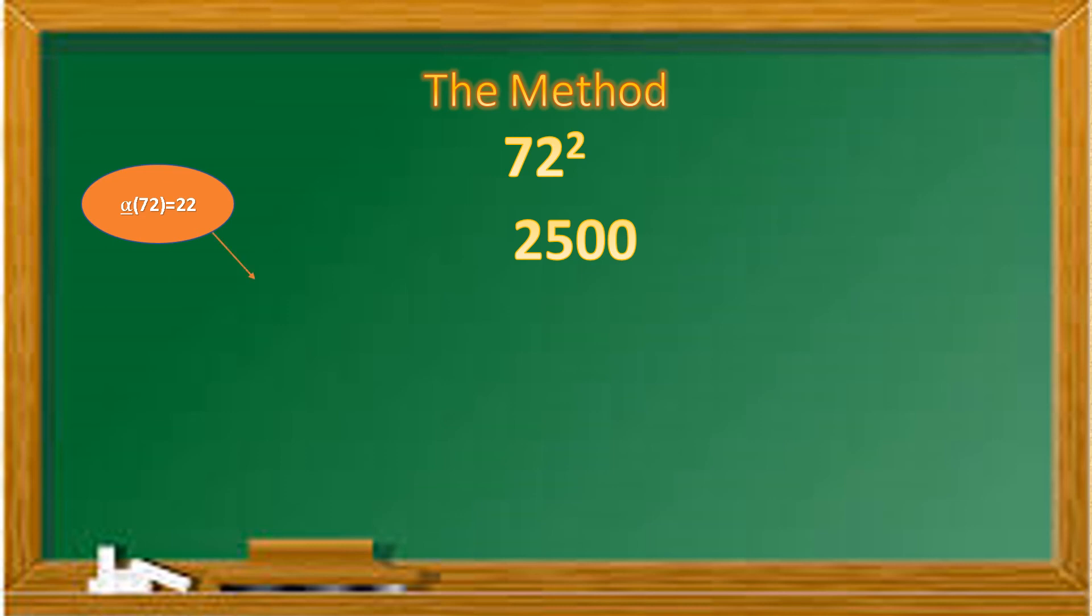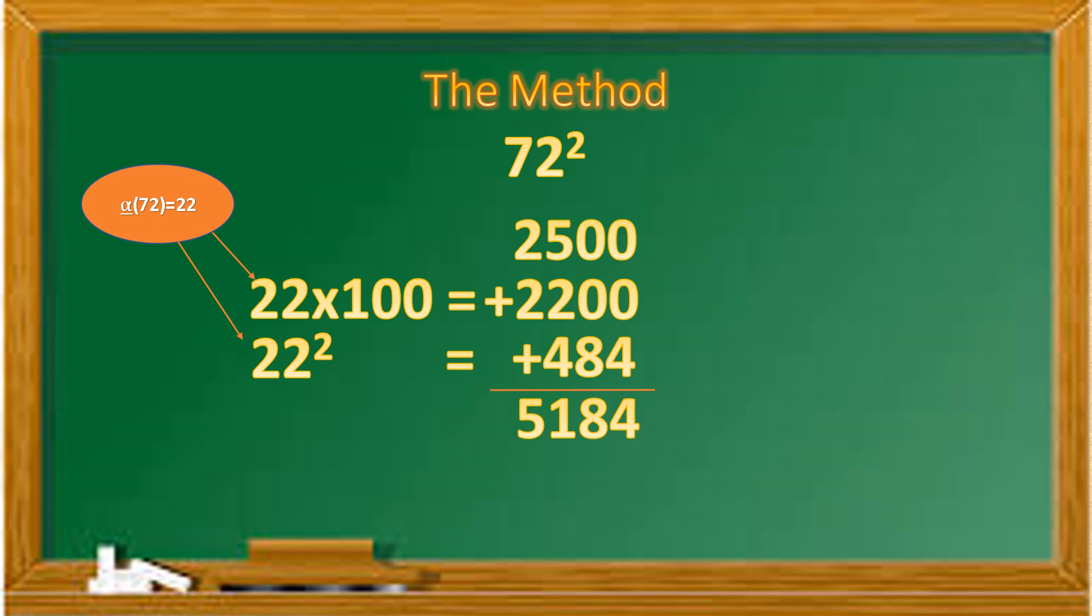The next two numbers will be given to us by 22. The first of which, yes you got that correctly, it is 2200, and the second will be the square of 22, that is 484. Adding all the three numbers, I will get my square of 72 as 5184.